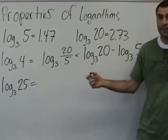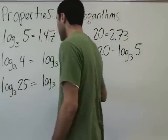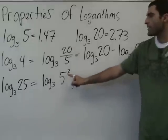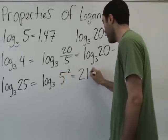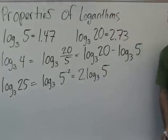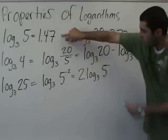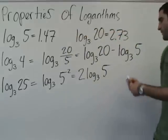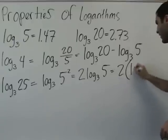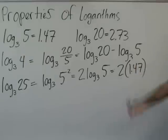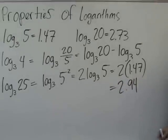Next problem. What can we format 25 to be using one of these? 5 times 5. 5 squared. So log base 3 of 5 squared equals, what's the third property of logs that we did? 2 times log base 3 of 5. The 2 comes to the front. Very good. Then we know that log base 3 of 5 is 1.47. So 2 times 1.47, and that is 2.94.